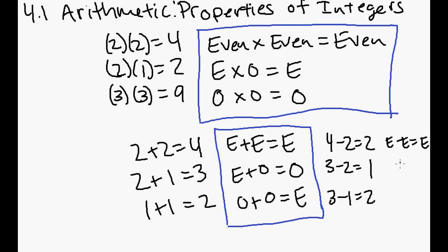So here we had even minus even equals even. Odd minus even equals odd. And then here we have odd minus odd equals even. So let me box that really quickly. Hopefully you guys can see that okay.